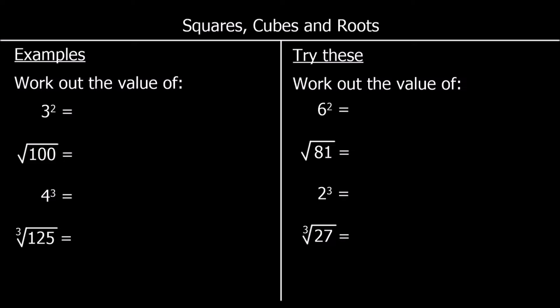Three squared: when we square a number that means we're multiplying it by itself, so three squared means three times three, and that is nine. The square root is the opposite of squaring, so the square root of 100 asks what number multiplies by itself to make 100 — that is 10.